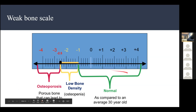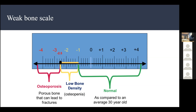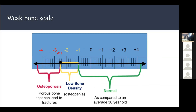Bone density scores: a score of negative 1 or lower indicates osteopenia, and negative 2.5 or lower indicates osteoporosis. Osteoporosis differs from osteogenesis imperfecta — osteogenesis imperfecta is caused by abnormal bone formation, while osteoporosis is caused by excessive bone breakdown driven by too much osteoclast activity. In elderly people, elevated parathyroid hormone boosts osteoclast activity excessively.